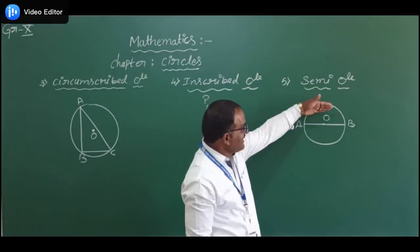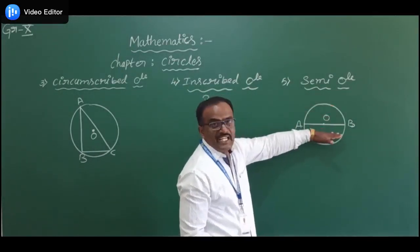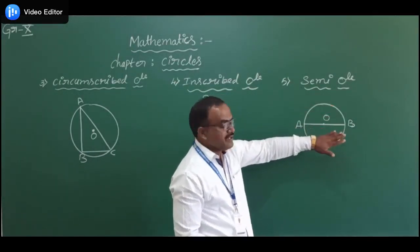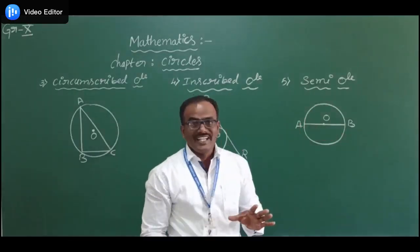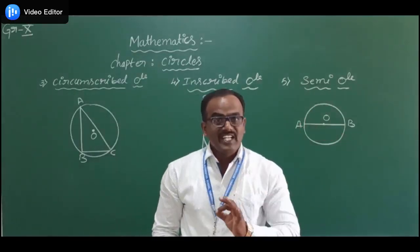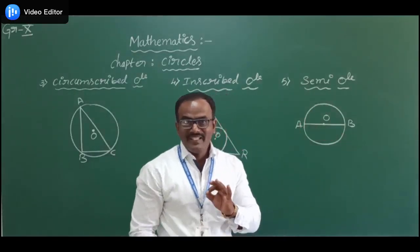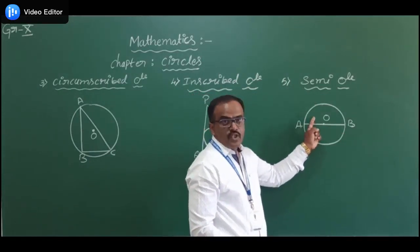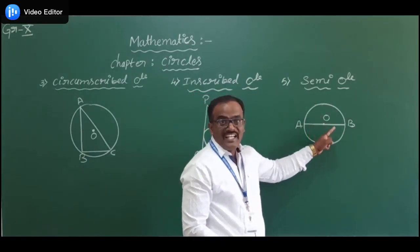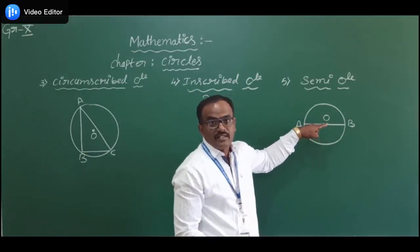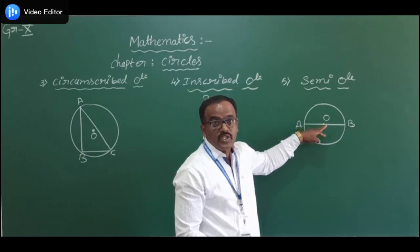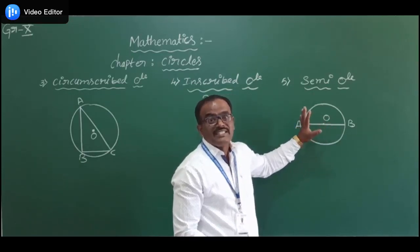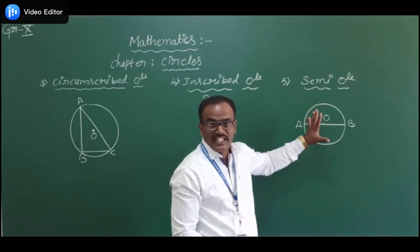One is the upper part and another is the lower part. Both the parts are called semicircles. A semicircle is the part of the circle which is divided by the diameter, and those two equal parts are called semicircles.